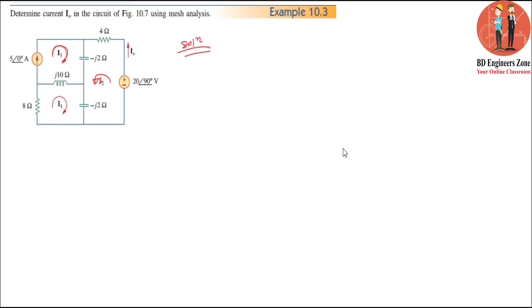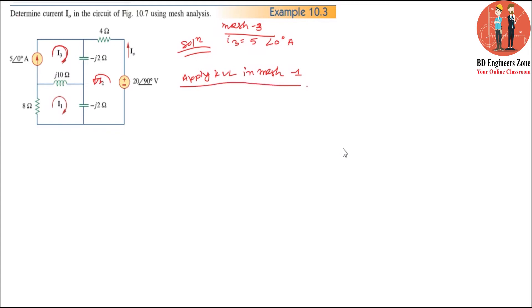Now we are looking at the circuit. I3 is 50 degrees Ampere. Mesh 1 is 50 degrees Ampere, I3 is 50 degrees Ampere — Mesh 1 is 50 degrees Ampere.